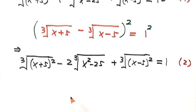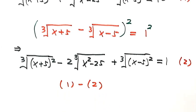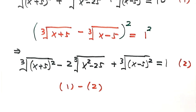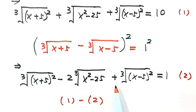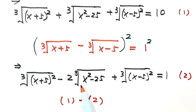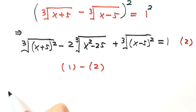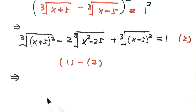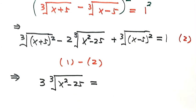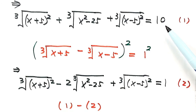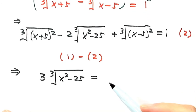Now we do Result 1 minus Result 2. The squared cube root terms cancel on both sides, leaving only: 3 times the cube root of (x²-25) equals 10 minus 1, which equals 9.